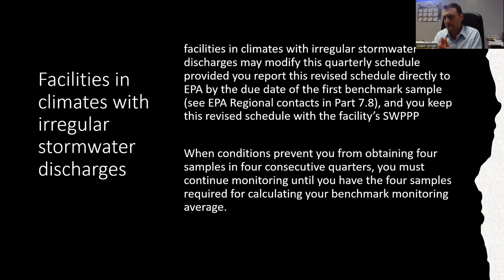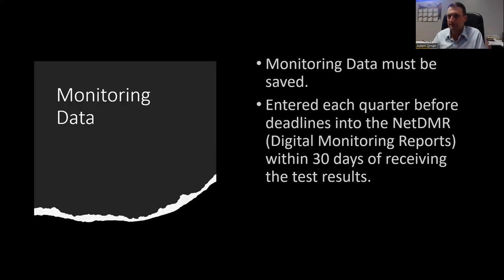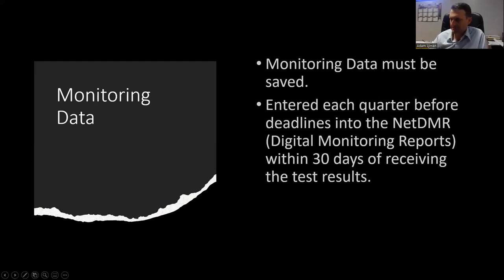You have to get four samples from your benchmark monitoring. If they are all below the parameters, you can stop monitoring until the fourth year. If they're not below the parameters, you have to keep monitoring. Save the data — you enter results at each quarter into the DMR system. Our state uses the federal DMR system still. You have to enter results within 30 days of receiving the test results from the laboratory.